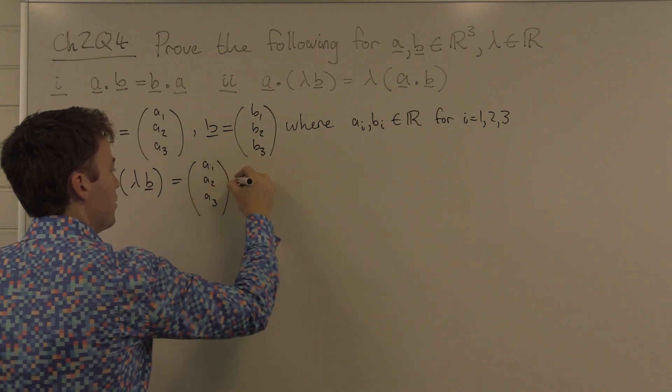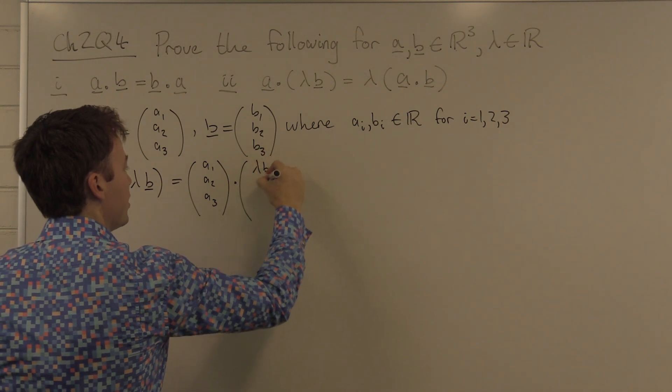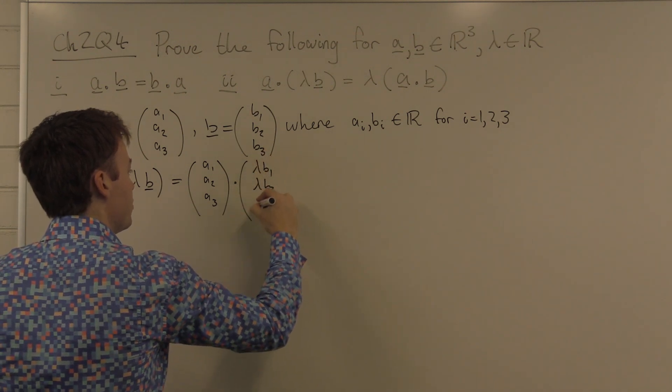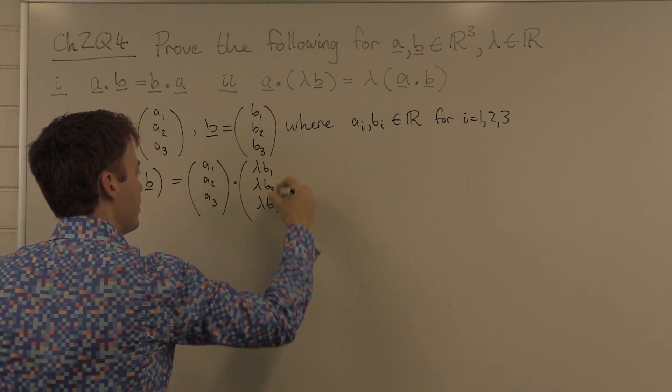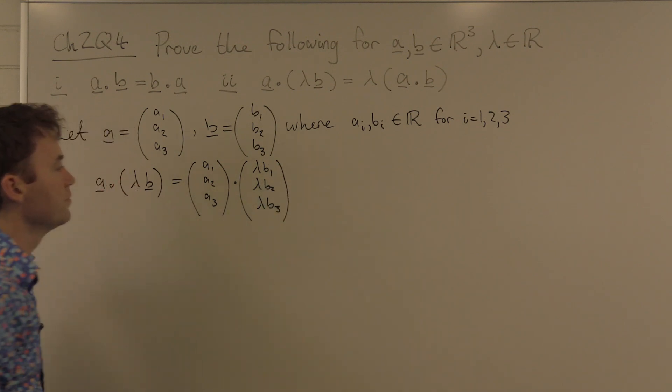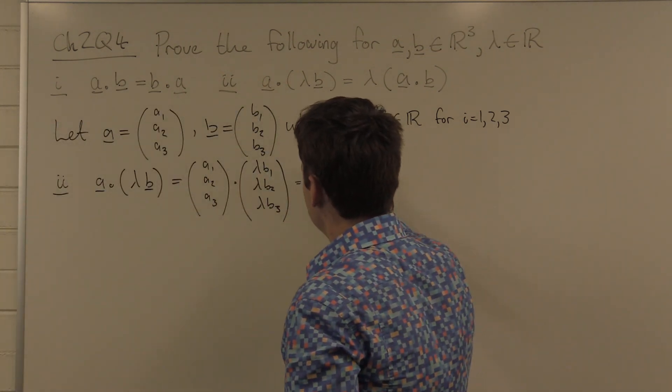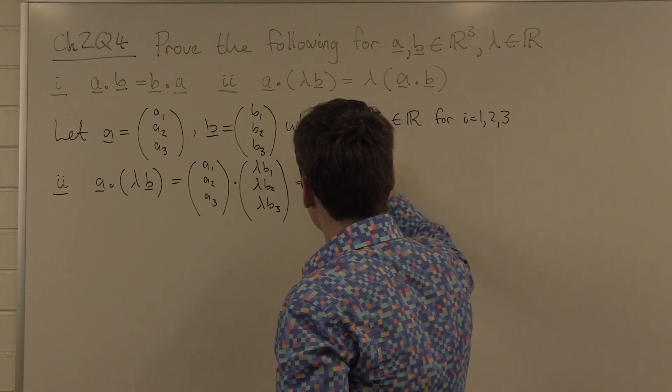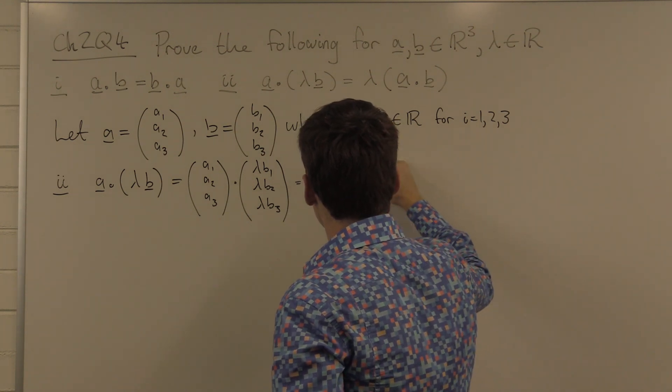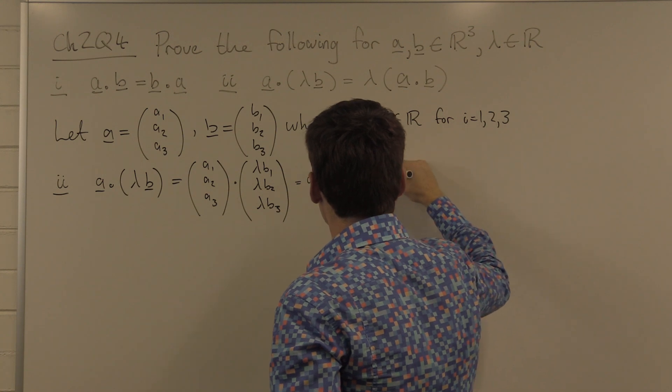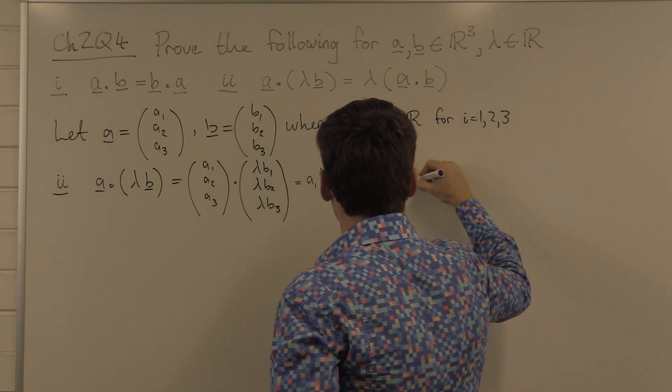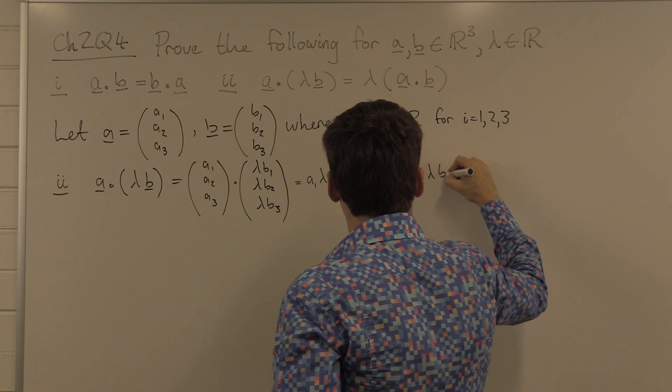And we know lambda B is lambda B1, lambda B2, lambda B3. I will now take the dot product of these two vectors. And we know how. It's equal to A1 lambda B1 plus A2 lambda B2 plus A3 lambda B3.